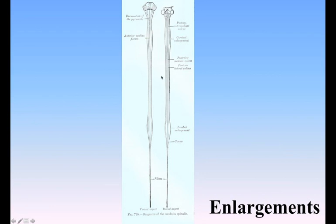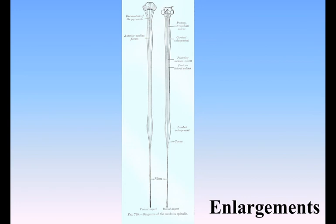Enlargements. The Medulla Spinalis is not quite cylindrical, being slightly flattened from before backward. It also presents two swellings or enlargements, an upper or cervical and a lower or lumbar. The cervical enlargement is the more pronounced and corresponds with the attachment of the large nerves which supply the upper limbs. It extends from about the third cervical to the second thoracic vertebra, its maximal circumference of about 38 mm being on a level with the attachment of the sixth pair of cervical nerves. The lumbar enlargement gives attachment to the nerves which supply the lower limbs. It commences about the level of the ninth thoracic vertebra and reaches its maximum circumference of about 33 mm opposite the last thoracic vertebra, below which it tapers rapidly into the conus medullaris.